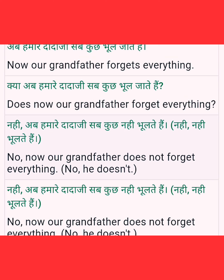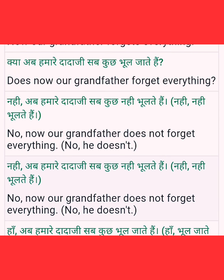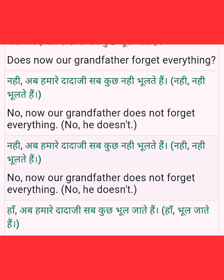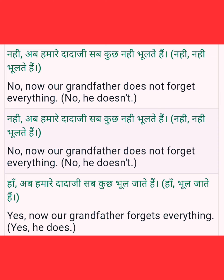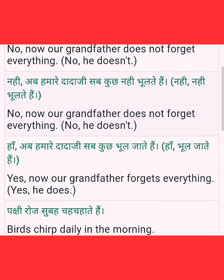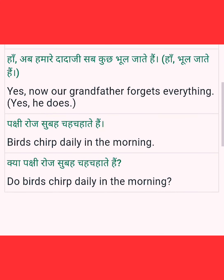Next: 'Our grandfather forgets everything' — hamare daada ji sab kuch bhool jaate hain. Since 'grandfather' is a singular person, we use 'does' in the question: Does our grandfather forget everything? Negative: no, our grandfather doesn't forget everything — no, he doesn't. Positive short answer: yes, he does.